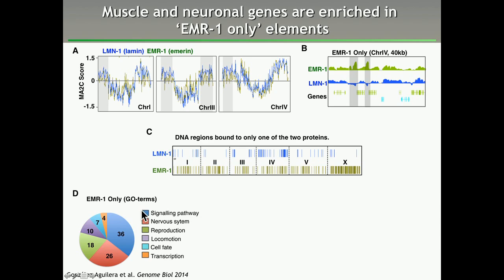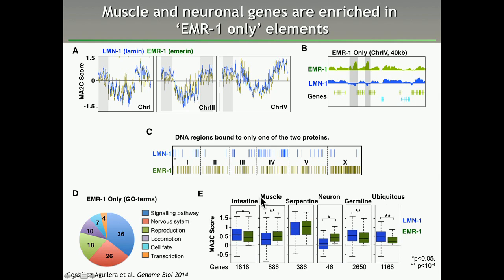We also analyzed the data by taking genes known to be expressed in specific tissues — such as intestine, the germline, or ubiquitously expressed genes — and found these are typically more associated with Lamin than with Emerin. But genes expressed in muscle and the nervous system have a higher overall interaction with Emerin than with Lamin. So even though Emerin and Lamin both sit in the nuclear envelope, they do have certain specificities.